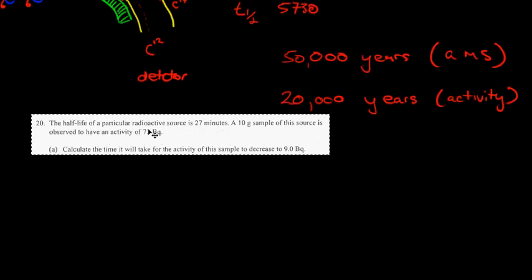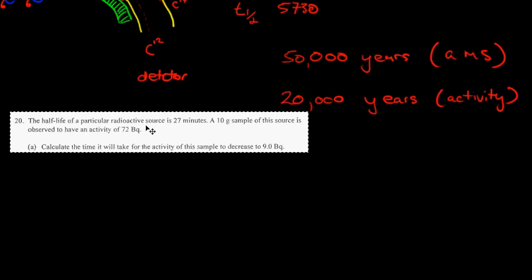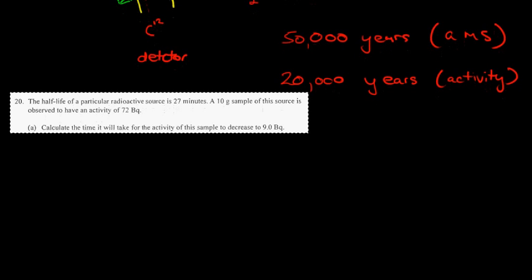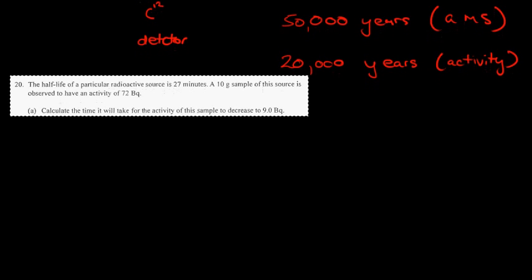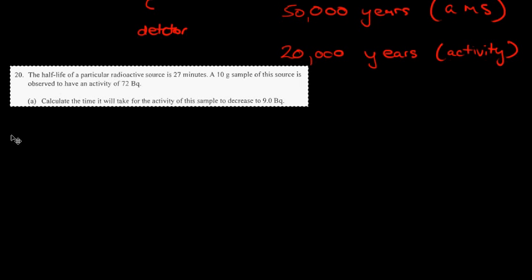Here's an example — this has nothing to do with mass spectrometry but is useful for Year 12 students. The half-life of a particular radioactive source is 27 minutes. A 10-gram sample of the source is observed to have an activity of 72 becquerels. Calculate the time it will take for the activity of this sample to decrease to 9 becquerels.